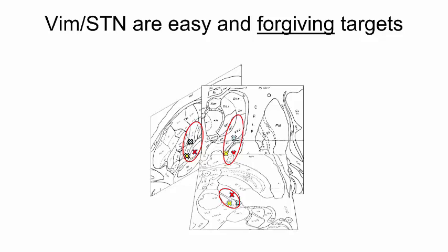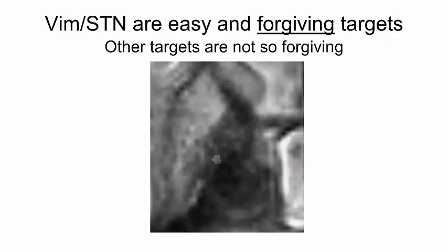Likewise, if you target the STN in a patient with tremor-dominant Parkinson's disease, but end up in the VIM, or in the zona incerta, or in a number of other closely related areas, you will still have a quite happy patient. Other targets, like the GPI or the anterior nucleus of the thalamus, are not that forgiving. If you miss the target, you will get a poor effect.